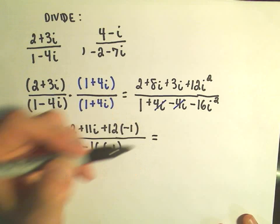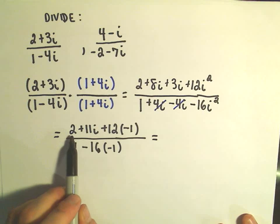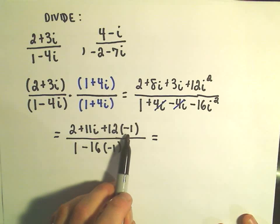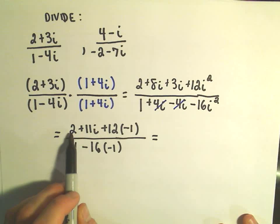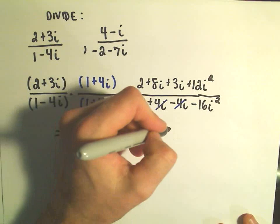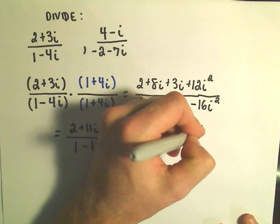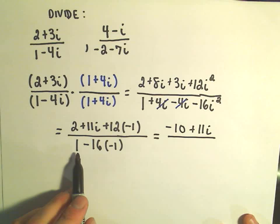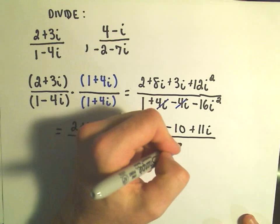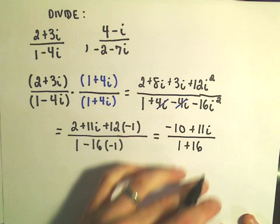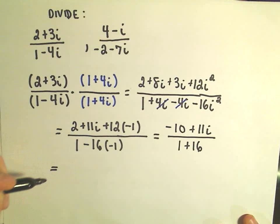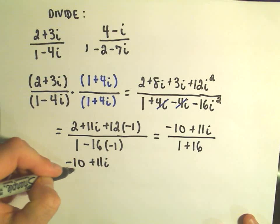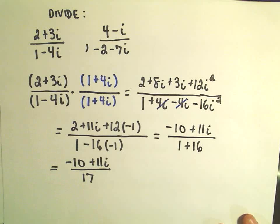And now it's just a matter of simplifying it up a little bit more. So it looks like in the numerator, we have 2. It looks like we have positive 12 times negative 1, which is negative 12. So to me, this says 2 minus 12, which will give us negative 10. We still have the 11i in the numerator. And then we have, let's see, negative 16 and negative 1. So that's going to give us 1 plus 16. So we've got negative 10 plus 11i.